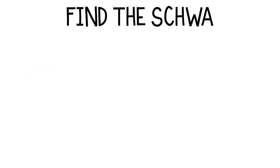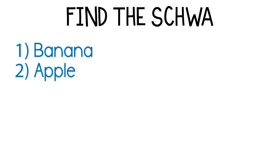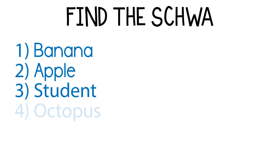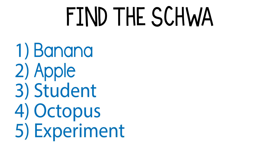Here are the five words: banana, banana — apple, apple — student, student — octopus, octopus — experiment, experiment. One of those words actually had two schwas in it. Can you work out which one?